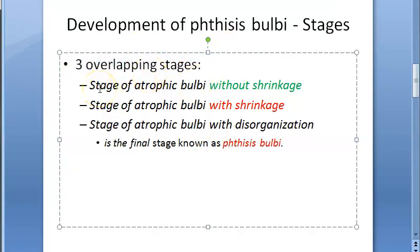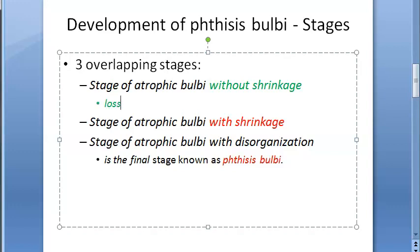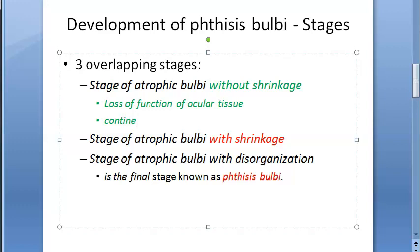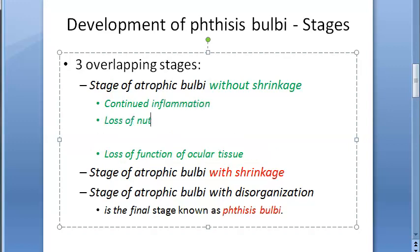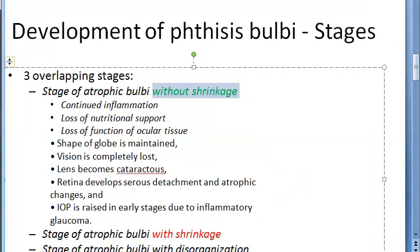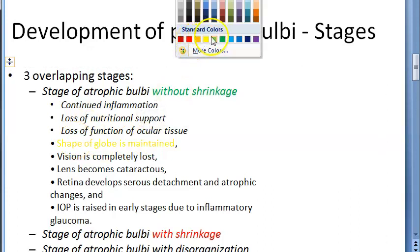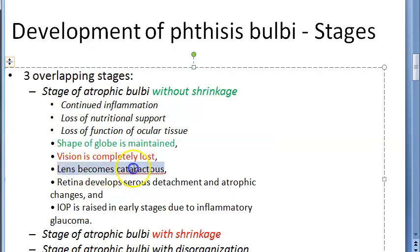Now let us look at the three overlapping stages of phthisis bulbi. Stage one is atrophic bulbi without shrinkage. In this initial stage, there is atrophy but the eye does not look shrunken. There is loss of function of ocular tissue due to continued inflammation or loss of nutritional support. The shape of the globe is maintained and vision is lost.